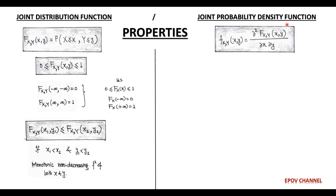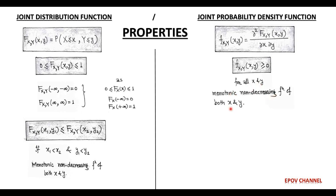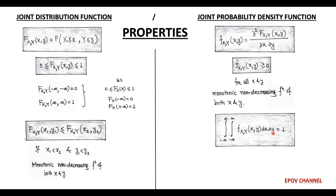Now we discuss the properties of the joint probability density function. Joint PDF is expressed in terms of the joint distribution function as small f(x, y) equal to ∂²/∂x∂y of capital F(x, y). The first property is that joint PDF is a non-negative function for all values of x and y. The second property is that the total area under the joint PDF curve is always unity — the double integration of f(x, y) as x and y tend to infinity equals 1.